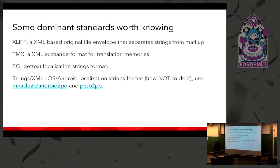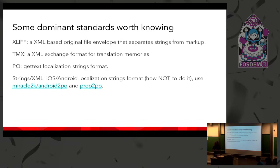Then there is TMX — an XML exchange format for translation memories. You export your translation memory and share it with another translator using TMX, which is a standardized format. The last format worth talking about is PO — the specialized format for the GetText library, a GNU tool. Software compiled with the GetText library can be localized this way; when you start localizing a project, you look for the GetText PO files. iOS and Android are long-standing offenders because they came up with proprietary formats — localizable strings and strings XML — though there are tools to convert these to the PO format.